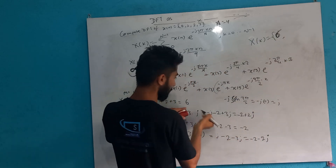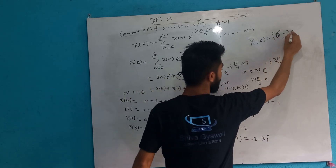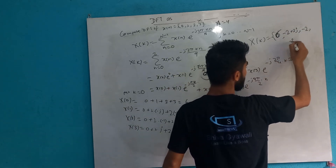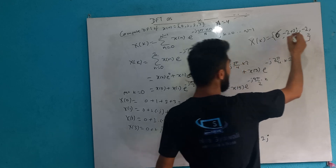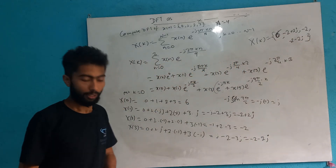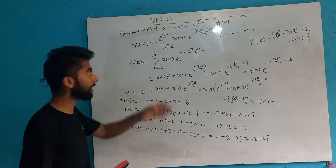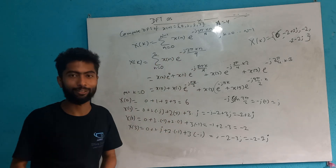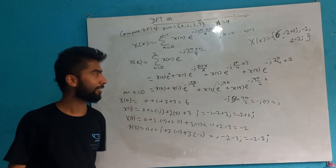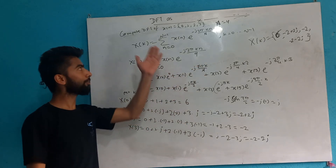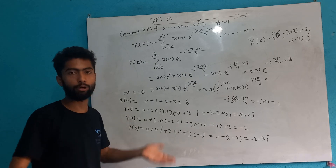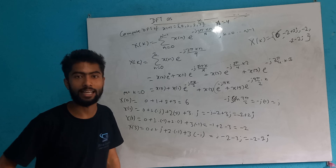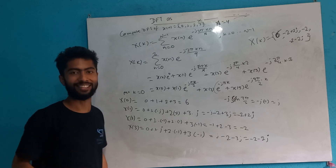So finally, our X[k] results are: 6, minus 2 plus 2j, minus 2, and minus 2 minus 2j. This is our X[k]. This is the matrix linear transformation — the same answer. Thank you so much for watching this video.